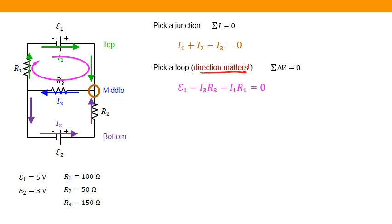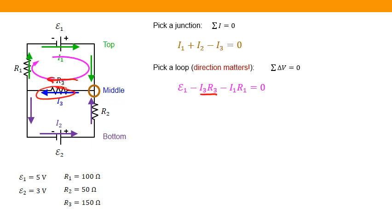Following the top loop, I go from the negative terminal to the positive terminal of the first battery, so I get +5 volts. The next element is R3, and I'm moving in the direction of current I3, so that's a −I3·R3 potential drop. The next element is R1, and again I'm moving in the direction of current I1, giving −I1·R1. Coming back to the same point, all of this equals zero: 5 − I3·R3 − I1·R1 = 0.